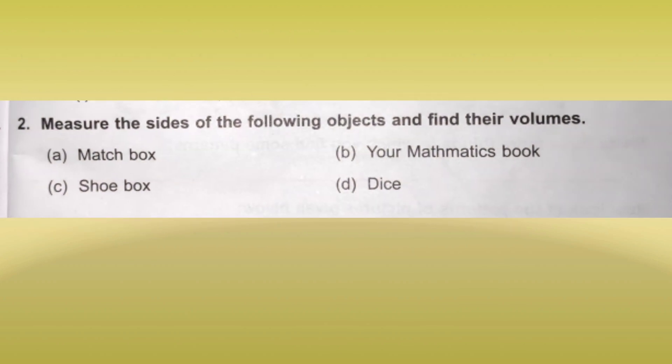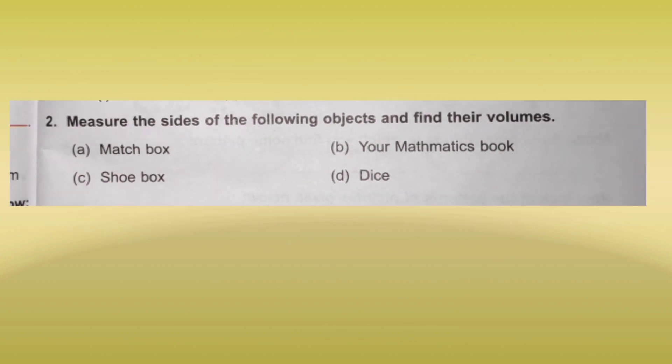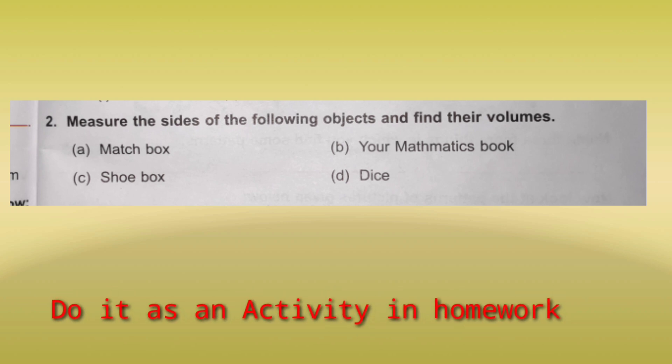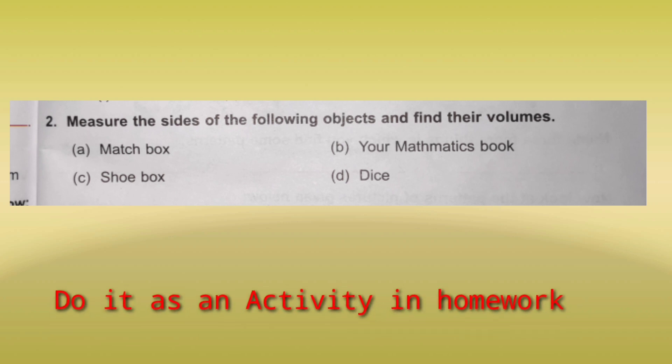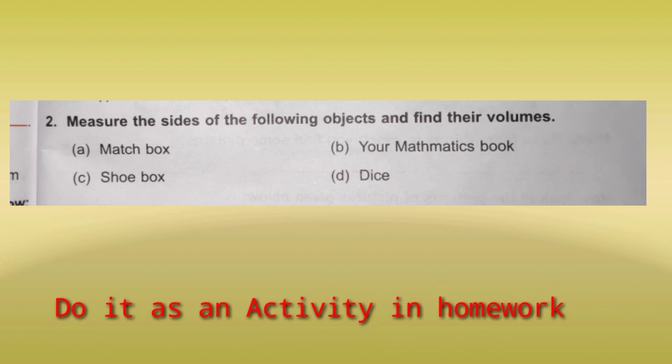Question number 2: measure the sides of the following objects and find their volume. This is an activity-based question. You will use a matchbox, shoe box, mathematics book, and dice from your house. Using a ruler, measure the height, length, and width of each object, then find the volume. You will do this yourself.